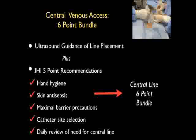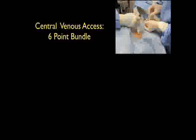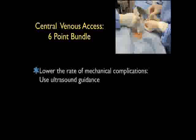The remaining IHI recommendations include maximal barrier precautions, catheter site selection — going for high lines over low lines — and a daily review of the need for a central line. Through adherence to the central venous access six-point bundle, we can potentially make the central venous access procedure a safer one for our patients.